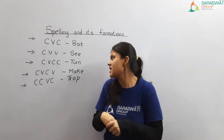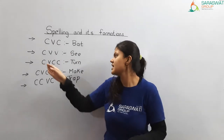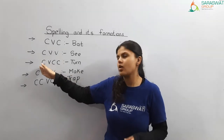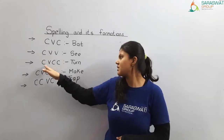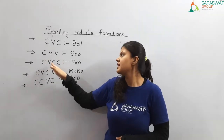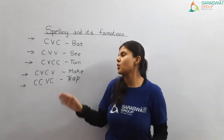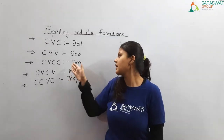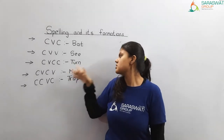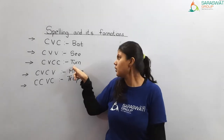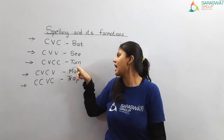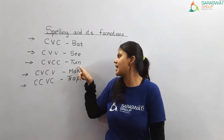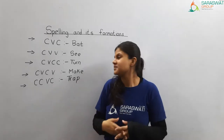The next basic formation is C-V-C-C: C being consonant, V being vowel, C again being consonant. The example I have taken is TURN: T is a consonant, U is a vowel, R is again a consonant, and N is also a consonant.